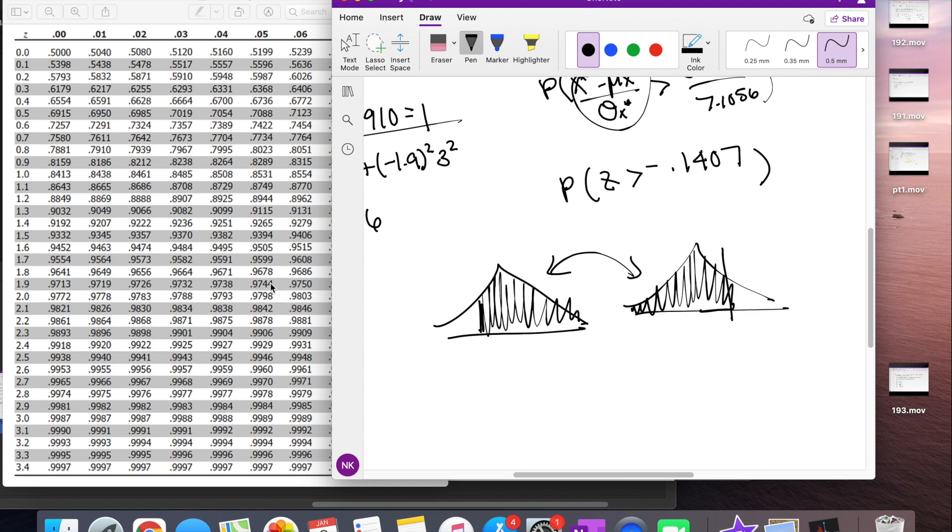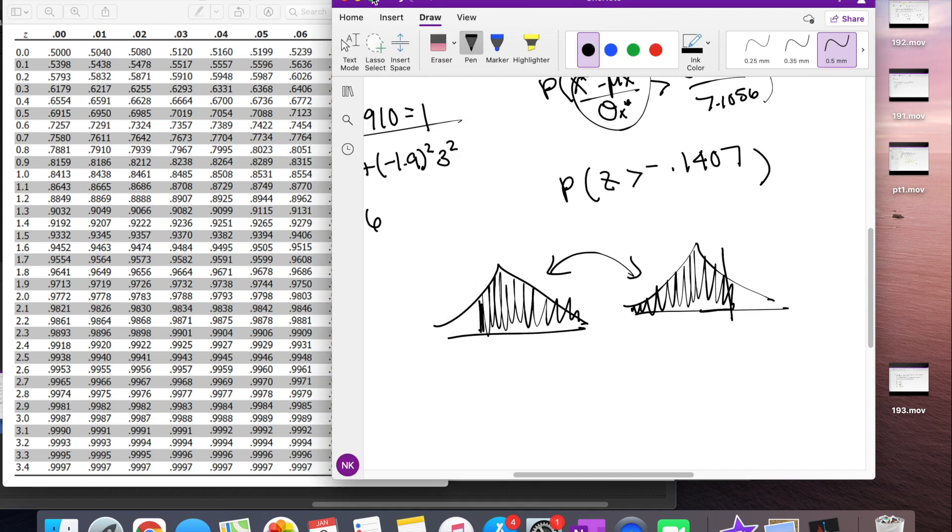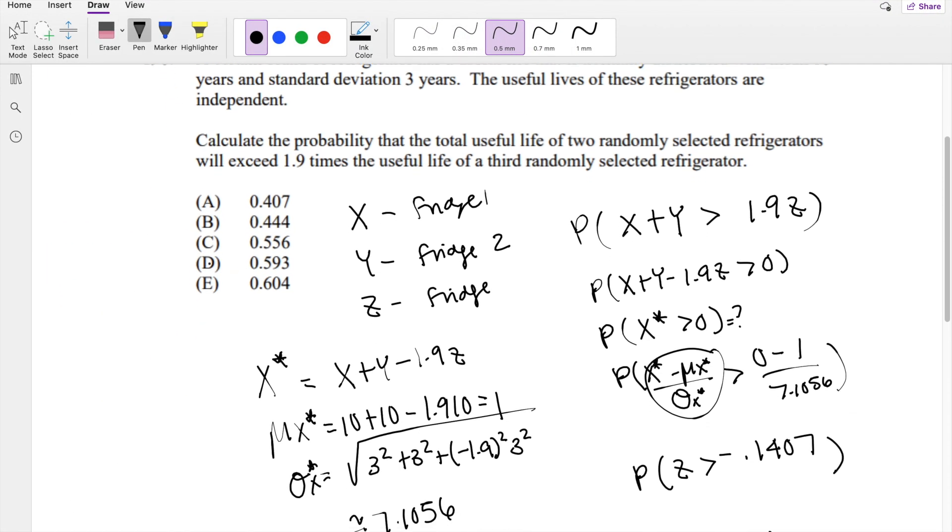So we're looking for 0.14, which gives us 0.5557. That's pretty close to 0.556. So our answer is C.